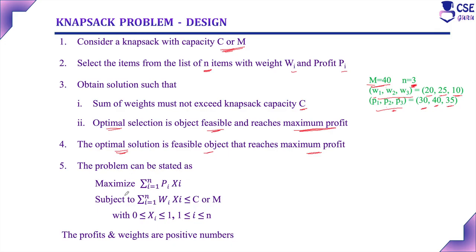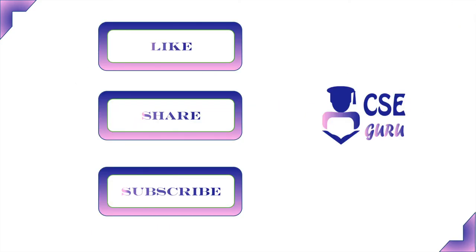The problem is stated as: maximize the sum from i=1 to N of pi times xi, where xi represents the selection of an object and pi is its profit, subject to the constraint that the sum of wi times xi must be less than or equal to C. Profits and weights must be positive numbers. In the next session we will solve a problem directly using these steps. Thank you for watching.